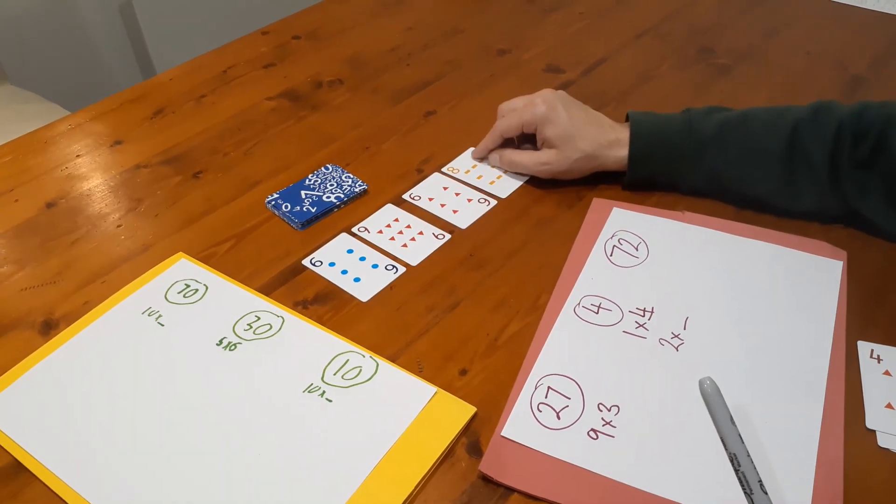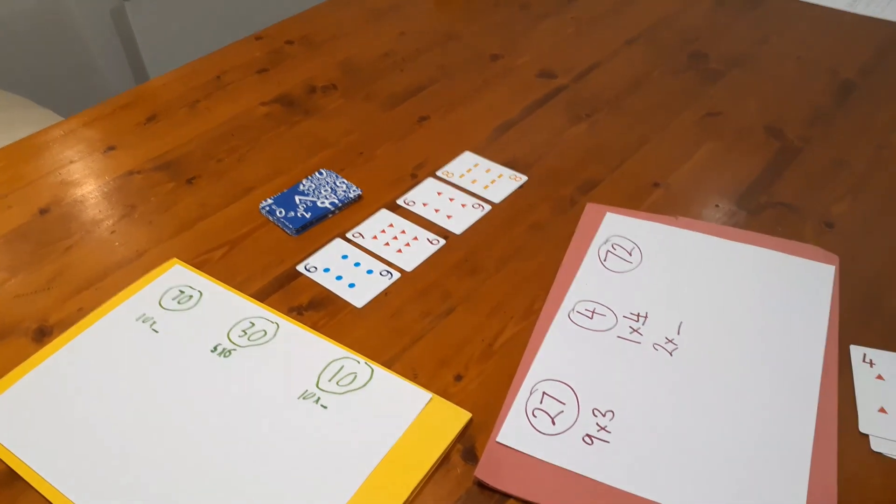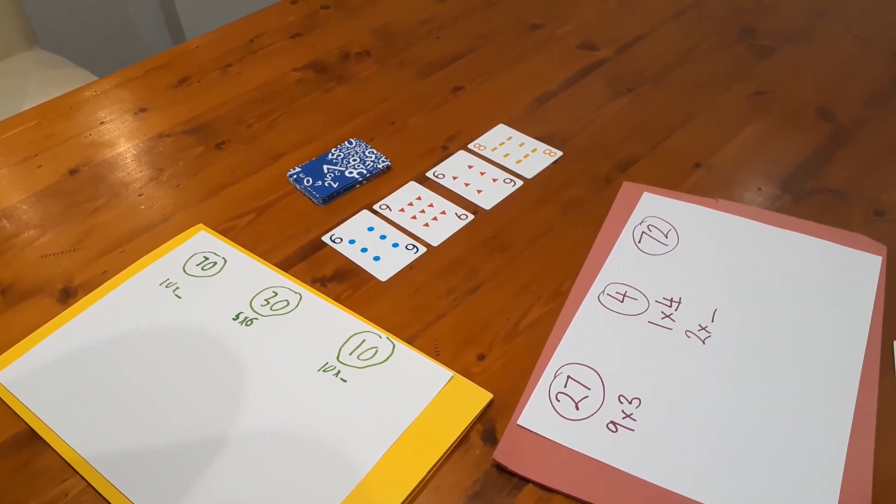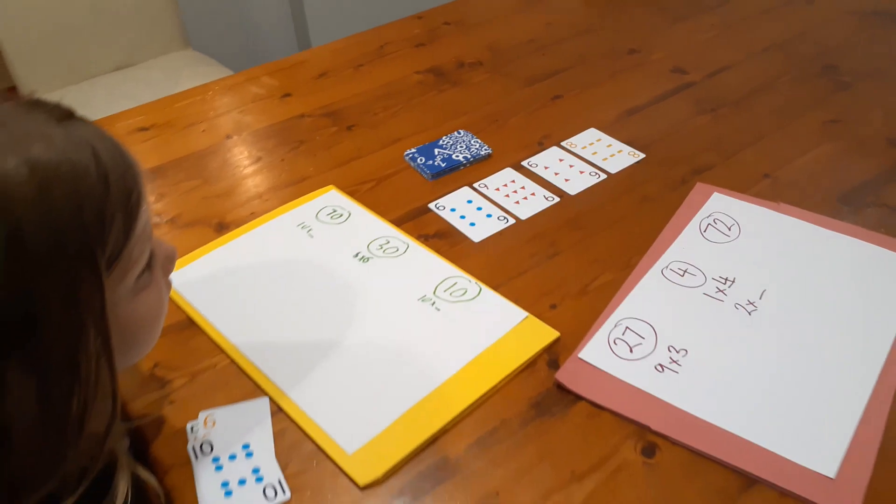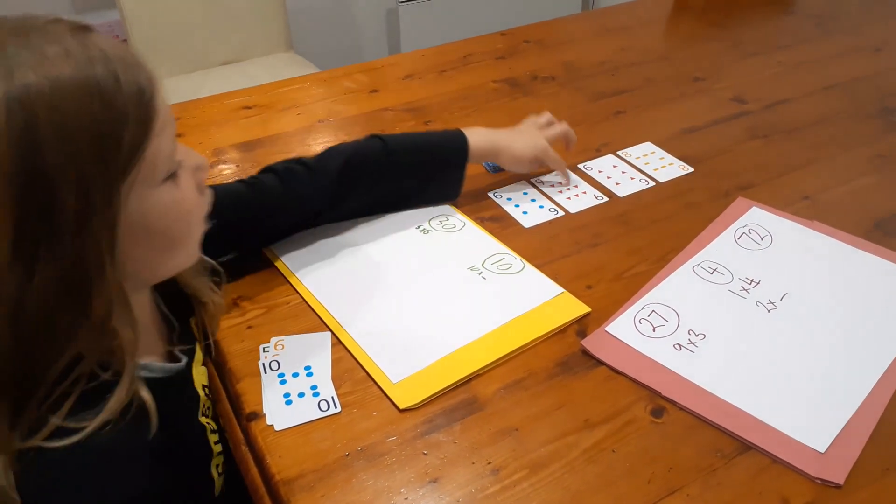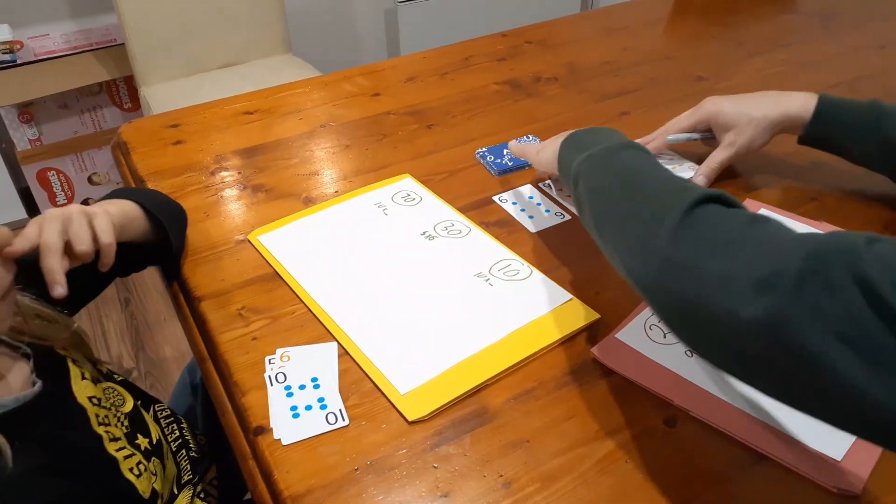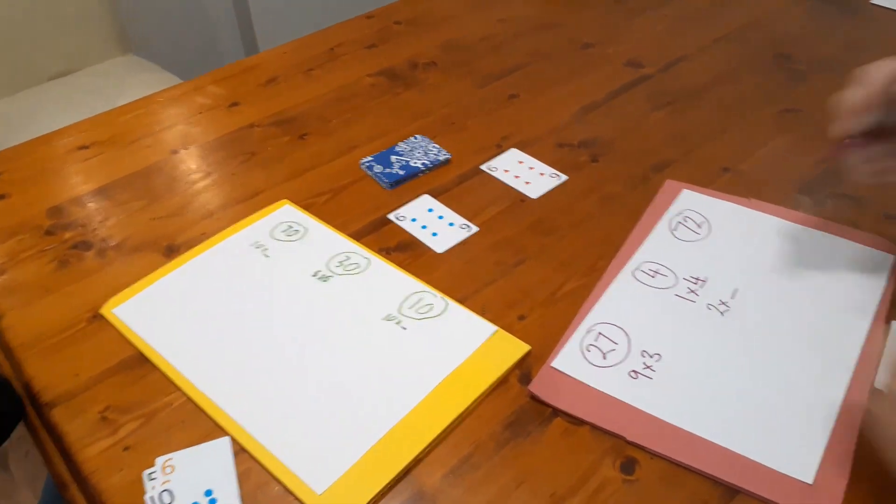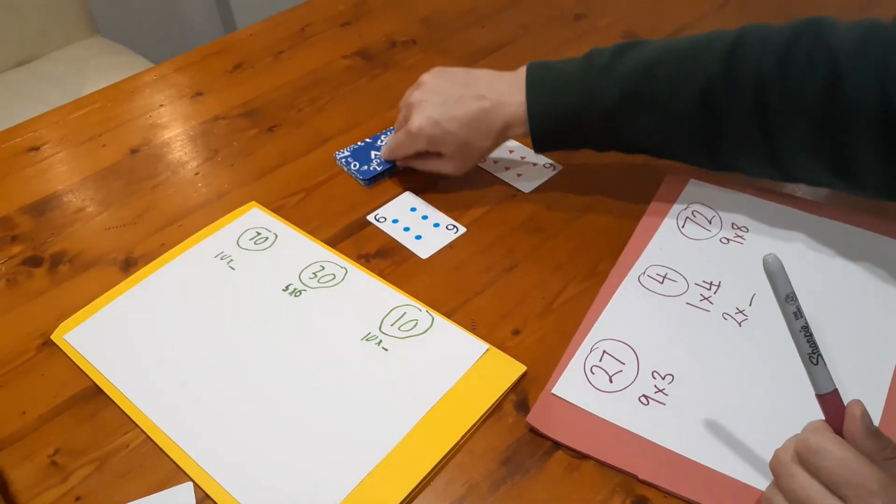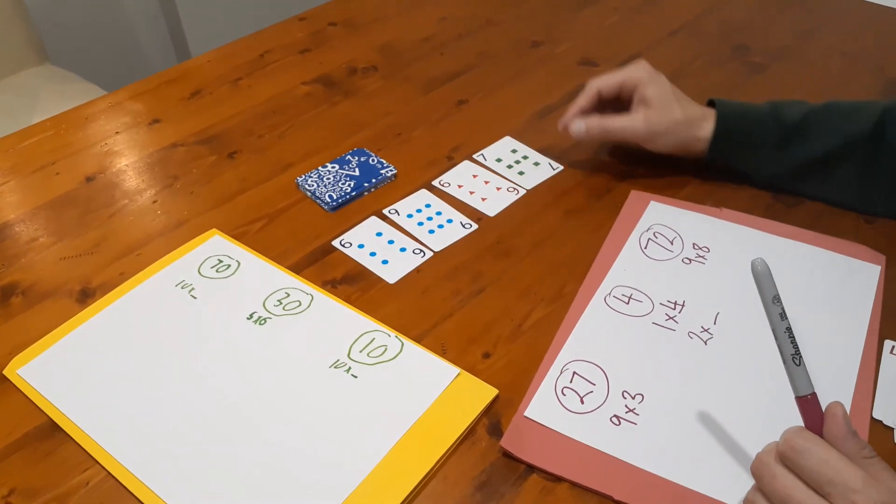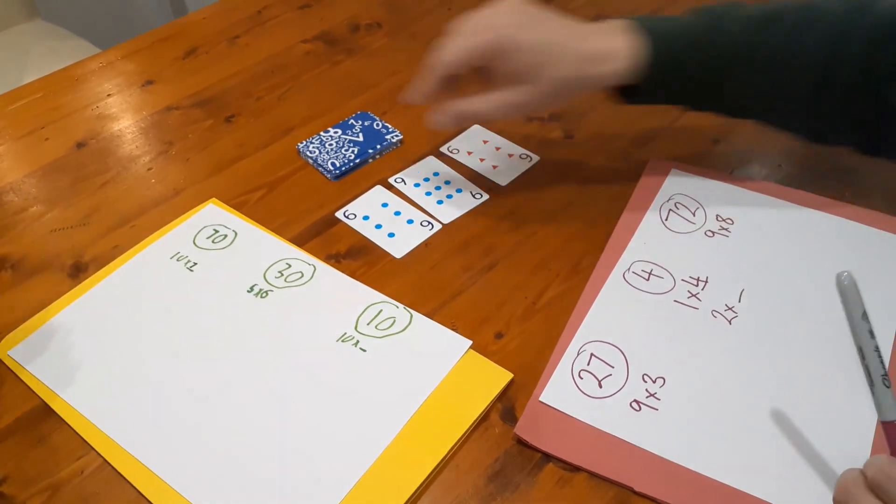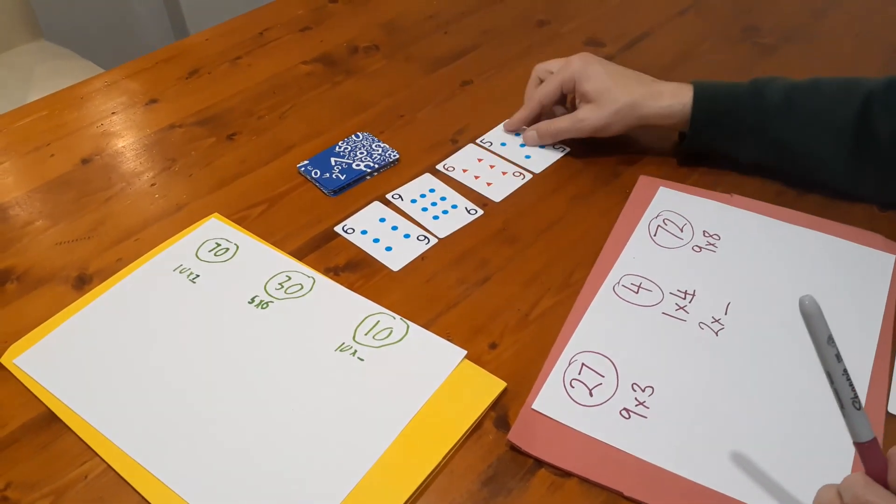All right now I still can't do anything so I pass again. Eight times blank into two. Oh no. Nine times eight into 72. Good boy. I wasn't going to tell you that. All right. Nine times eight into 72. So back to me and I'll put the seven on the 10 times seven. Back to you Nasha.